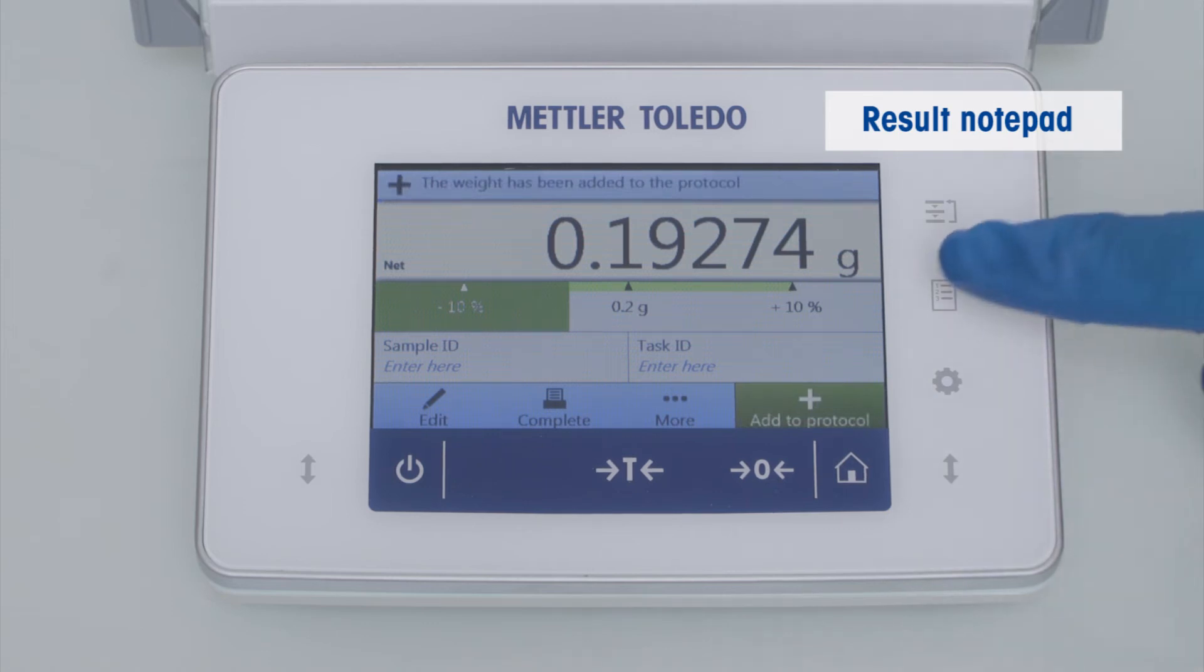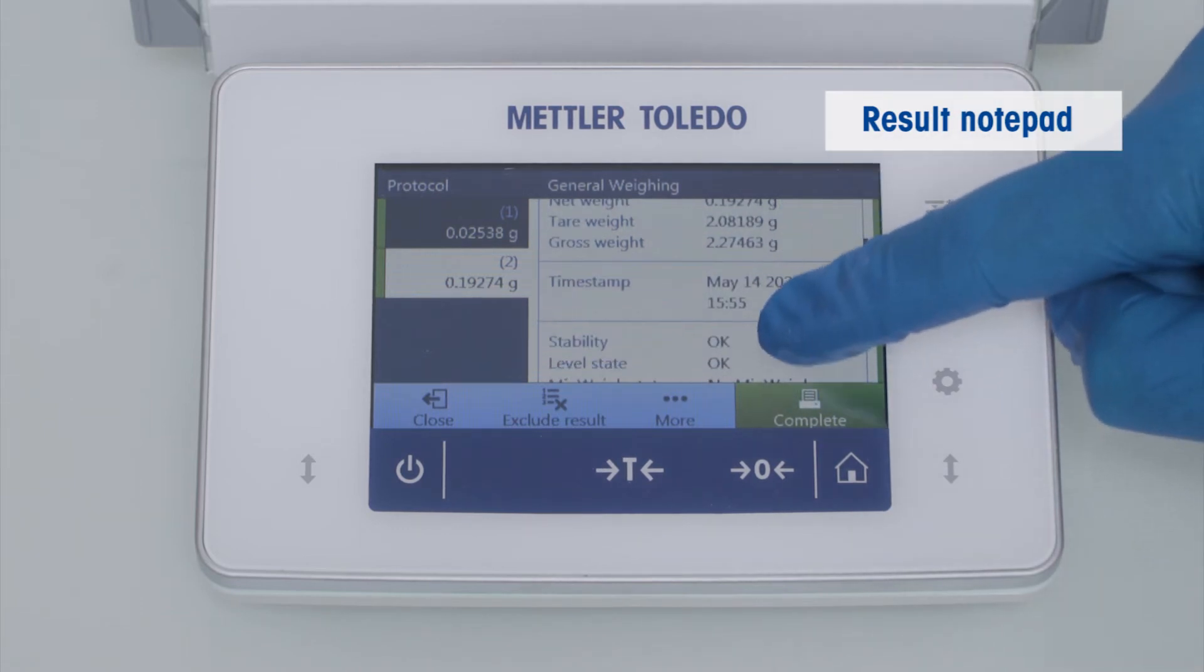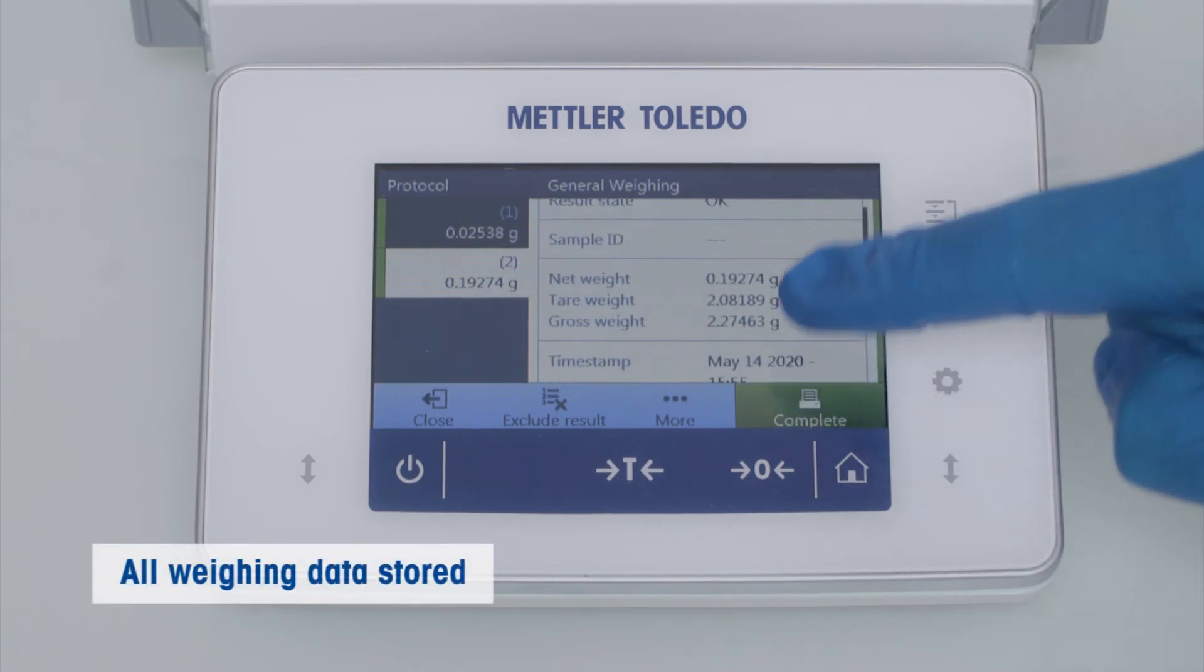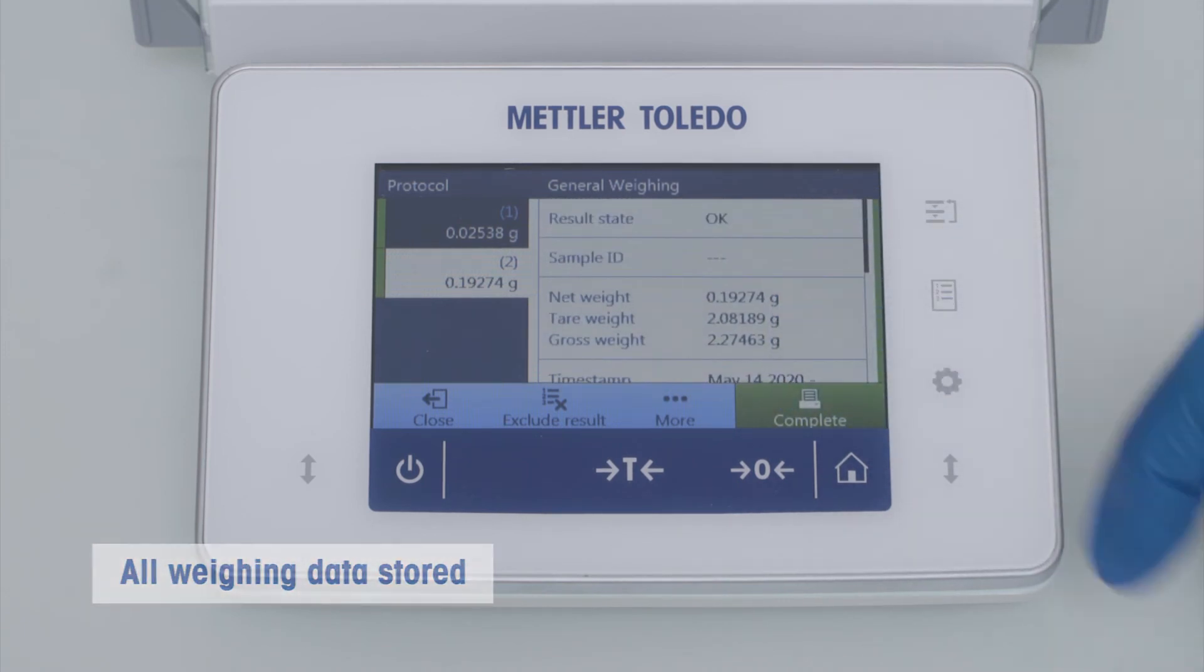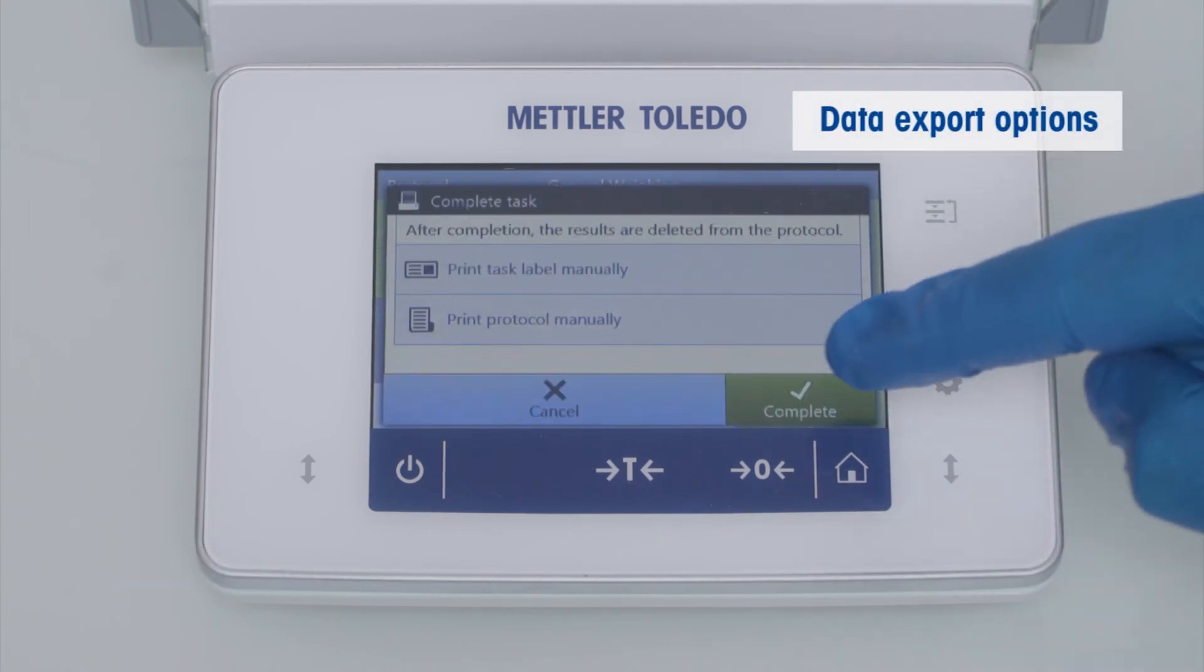It can collect and display multiple results including relevant metadata like level status, timestamp, etc., indicating the validity of individual results. Completing the weighing task by pushing the complete button either prints them or sends them to a connected PC or a back-end system.